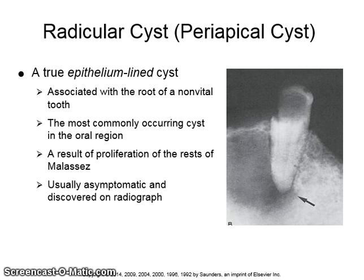A radicular cyst, or periapical cyst, is a true epithelium-lined cyst. It is associated with the root of a non-vital tooth. It is the most commonly occurring cyst in the oral region and is a result of proliferation of the rests of Malassez. It is usually asymptomatic and discovered on radiographs, because of its chronic nature, the fact that the tooth is usually self-draining, and there is no vital pulpal tissue.